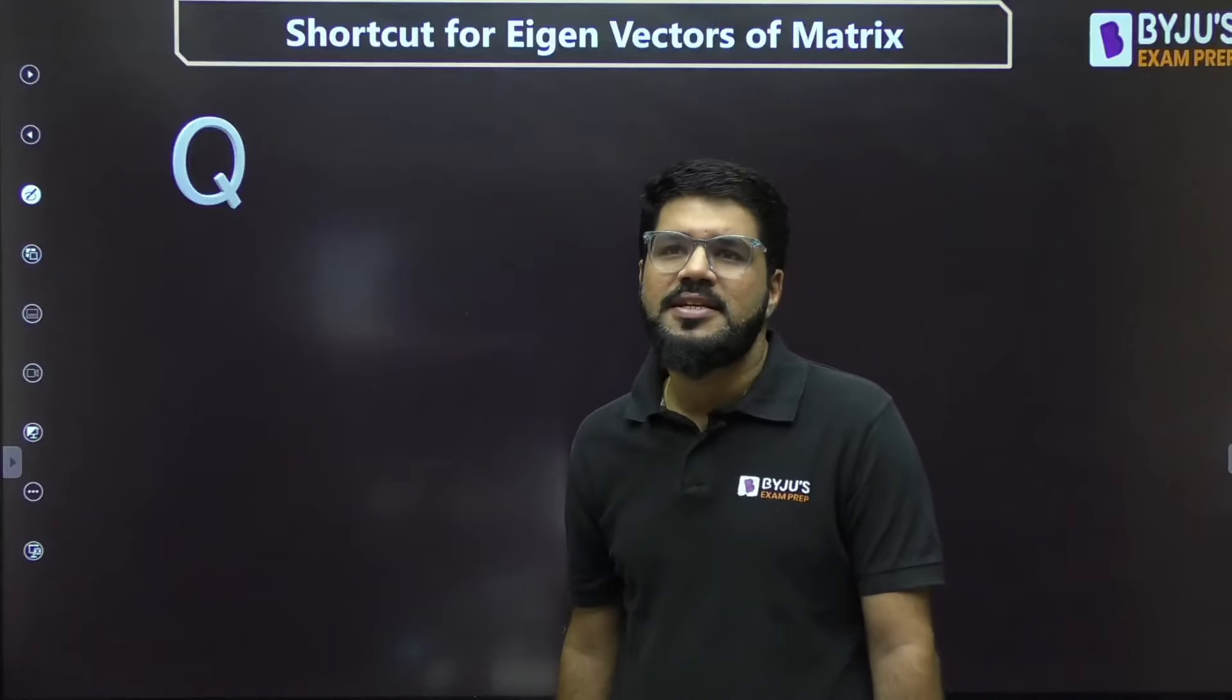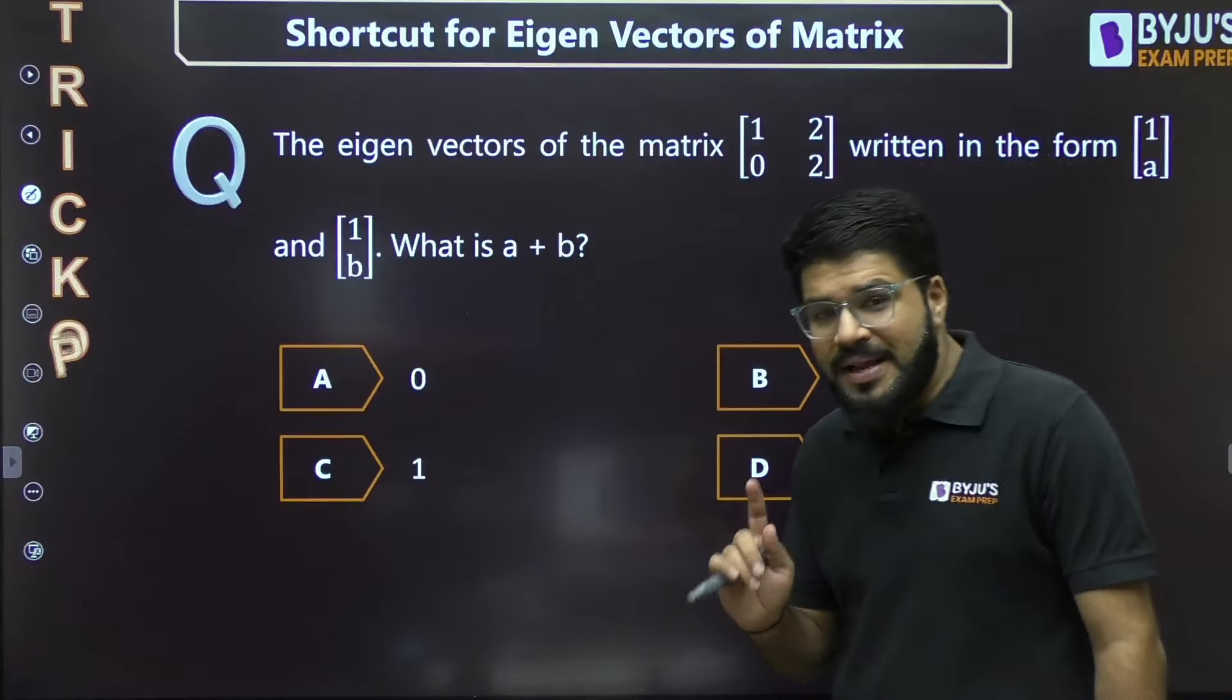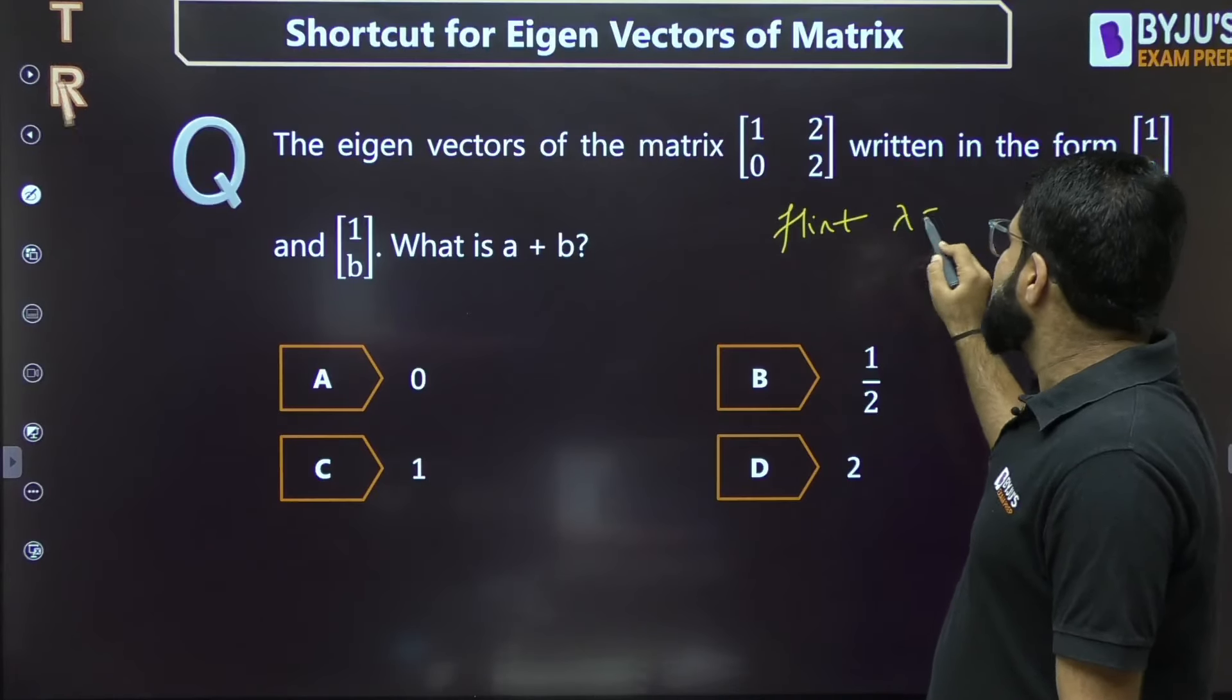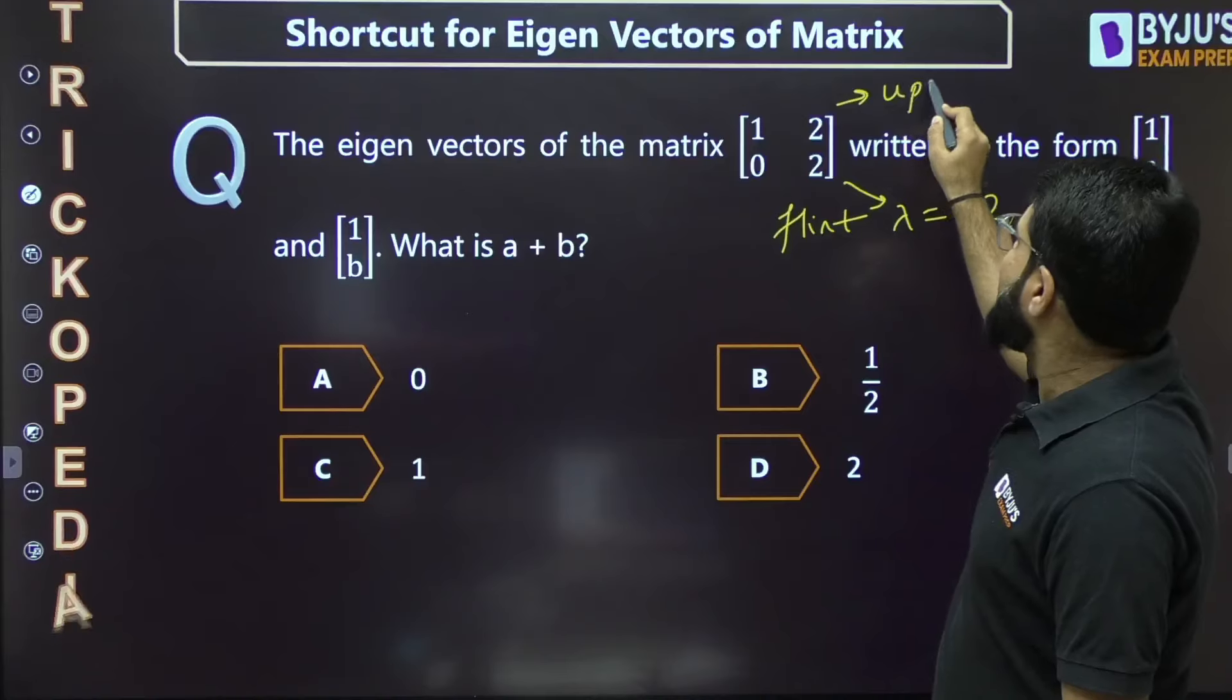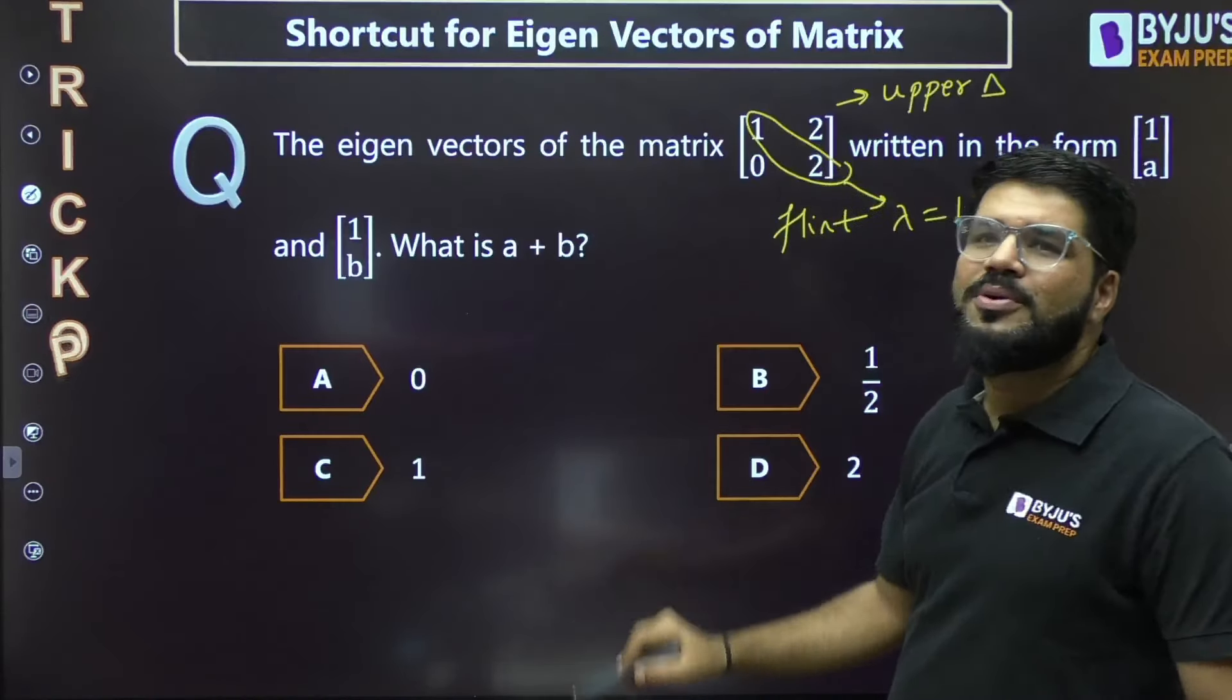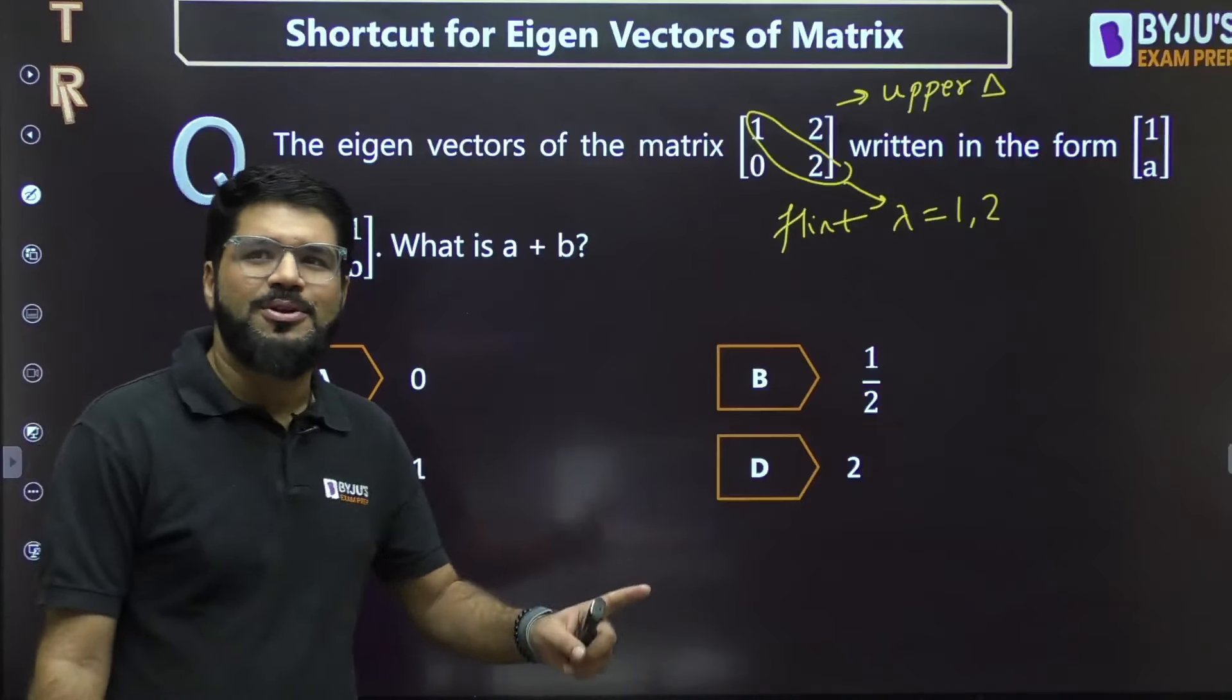If you've understood this trick, don't forget to solve this homework question and mention the answer in the comment box. One small hint: for this given matrix, eigenvalues are 1 and 2 because it's an upper triangular matrix, and for upper triangular matrices, eigenvalues are equal to the diagonal numbers.